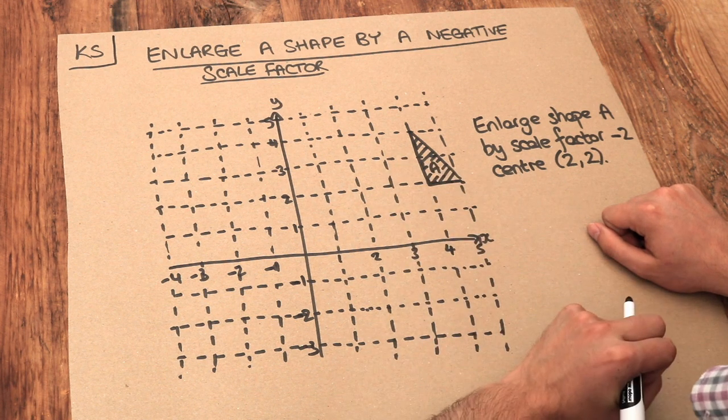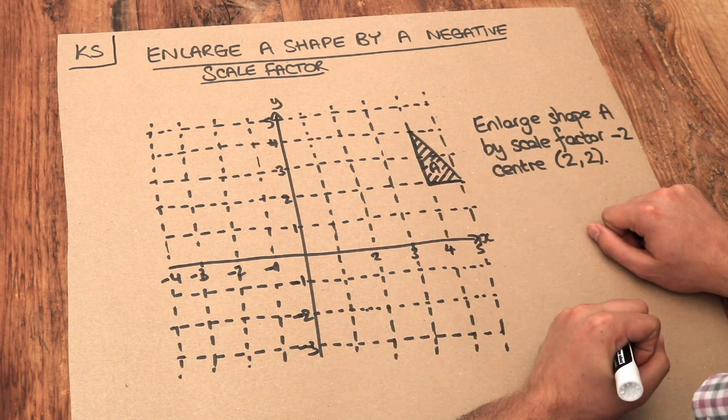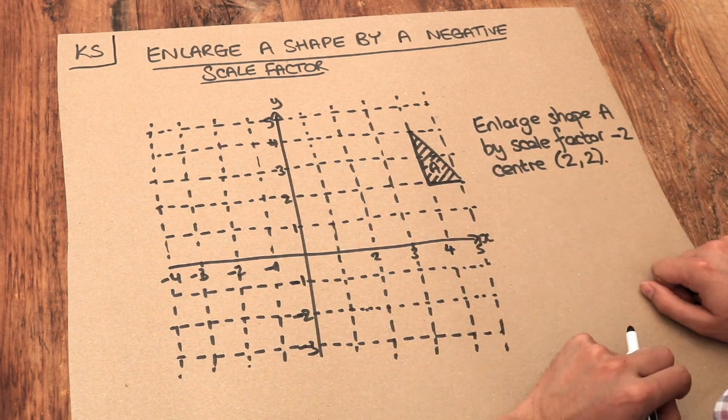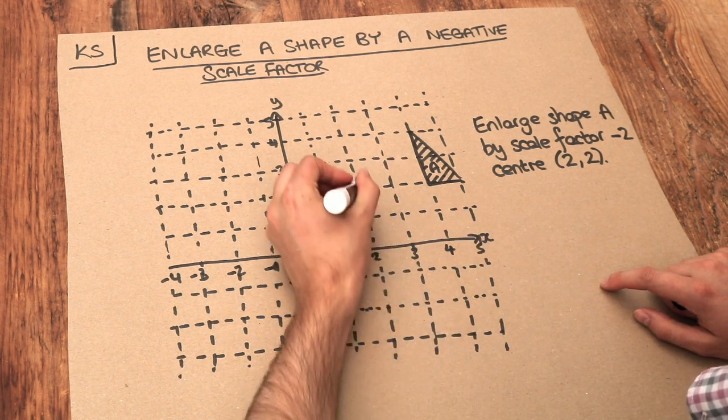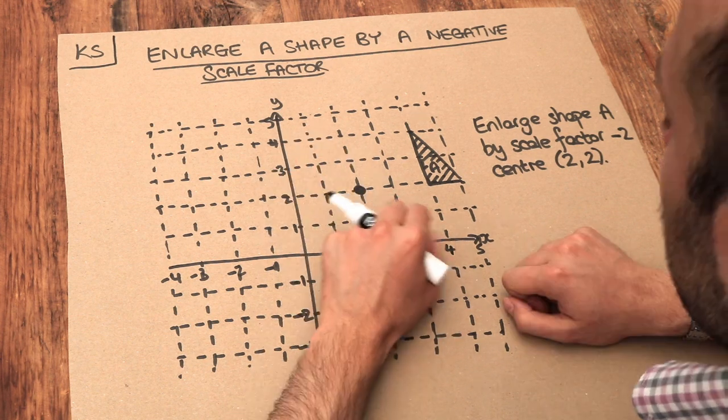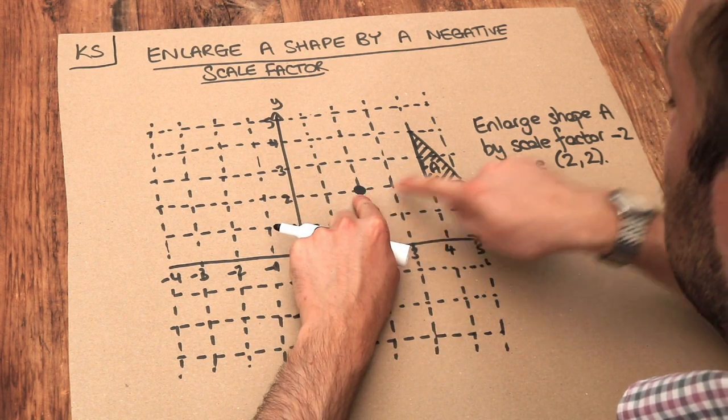Now as per my previous video on here when we dealt with positive scale factors, I always plot the centre of enlargement first. So the centre of enlargement is 2, 2. So 2, 2 is going to be here. And do you remember the strategy was to count from the centre of enlargement